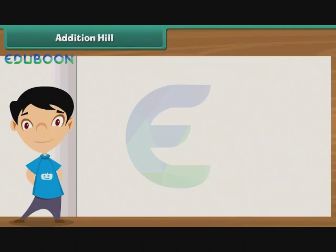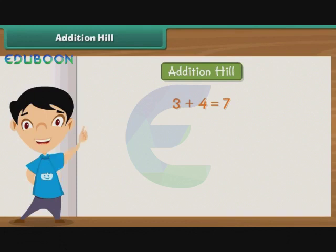Addition Hill. There is a very interesting pattern in addition called Addition Hill. We know that 3 plus 4 is 7. What will be 30 plus 40? 30 plus 40 is equal to 70.